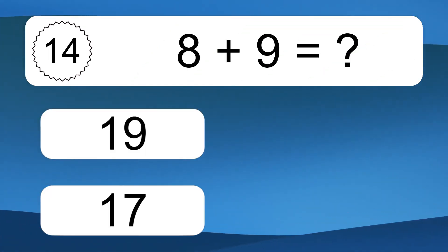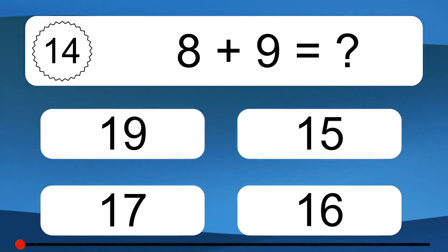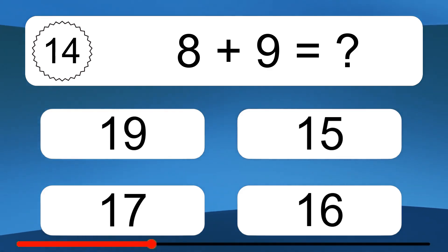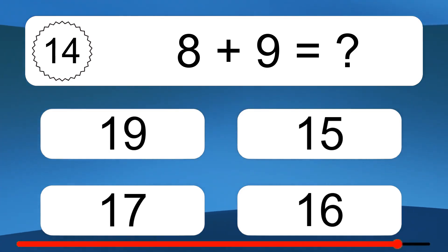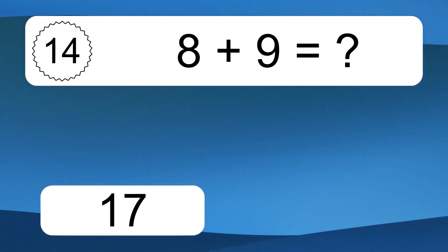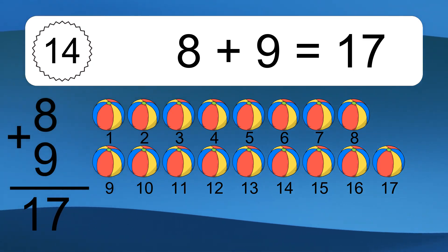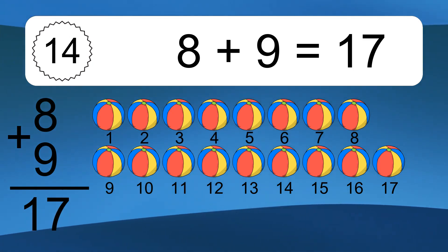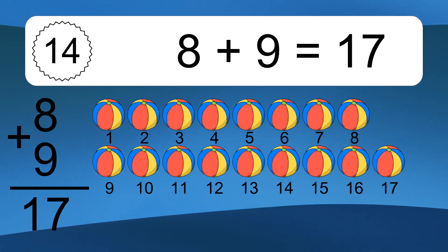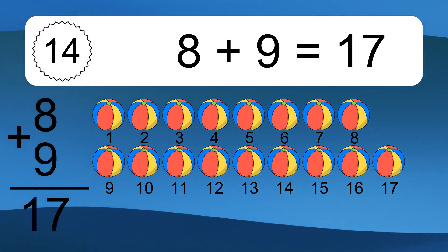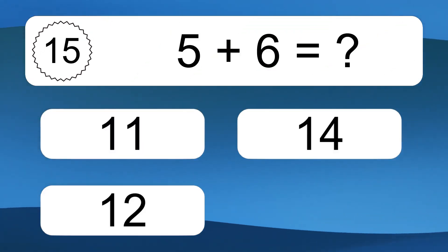8 plus 9 equals what? 8 plus 9 equals 17. Let's count it, 1, 2, 3, 4, 5, 6, 7, 8, 9, 10, 11, 12, 13, 14, 15, 16, 17.